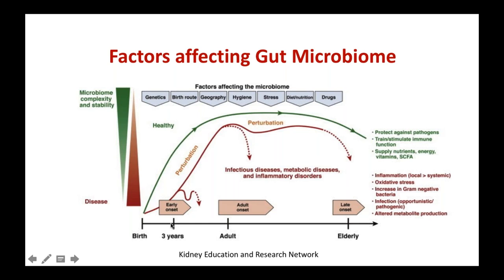Adult gut microbiome is reached by the age of three years, but alteration in microbial diversity of the gut can start right at that time — called early onset — and changes in gut microbiome can also take place during adulthood and later in life. It is important to realize that the state of health is associated with a greater degree of microbial complexity and stability. But as microbial complexity and stability decreases, the state of health goes down and a disease state supervenes, linked to development of infections, metabolic diseases, and inflammatory disorders.